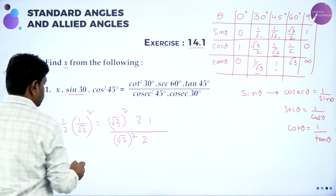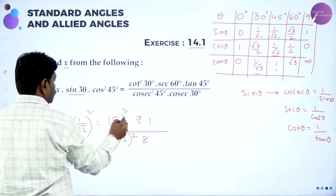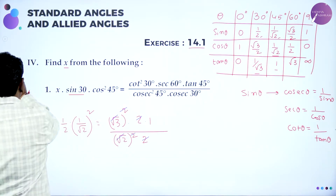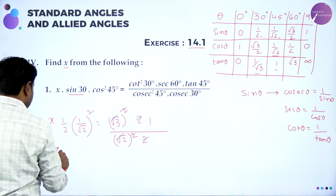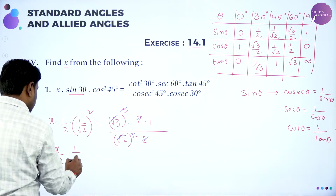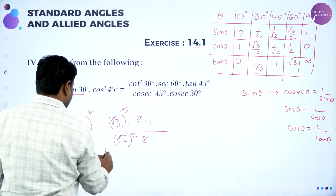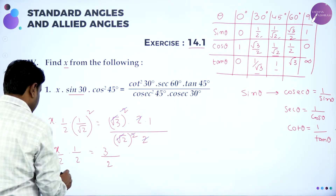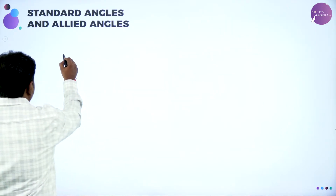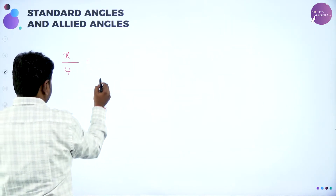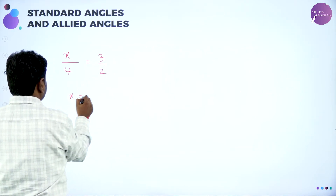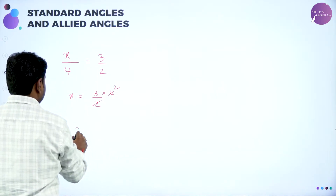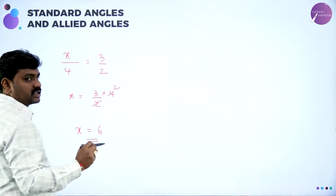Now simplify — cancel the like terms. Cancel 2 and 2. Square and square root cancel. Further, square and square root cancel again. We get x · (1/2) · (1/2) = 3 · 1 / 2. Rearranging, x/4 = 3/2, so x = 3/2 × 4 = 6. The value of x is exactly 6.